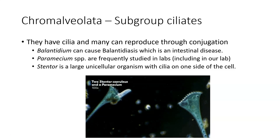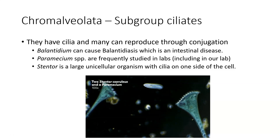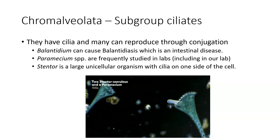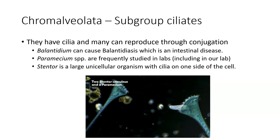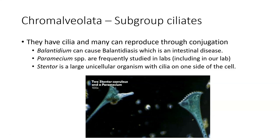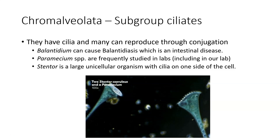Balantidium causes balantidiasis, which is an intestinal disease that tends to cause diarrhea. Paramecium is the poor little organism that the two Stentors are playing with — they tend to be pretty low on the food chain and eat bacteria. Stentor is the larger organism. Both the paramecium and the stentor are ciliates in this picture.